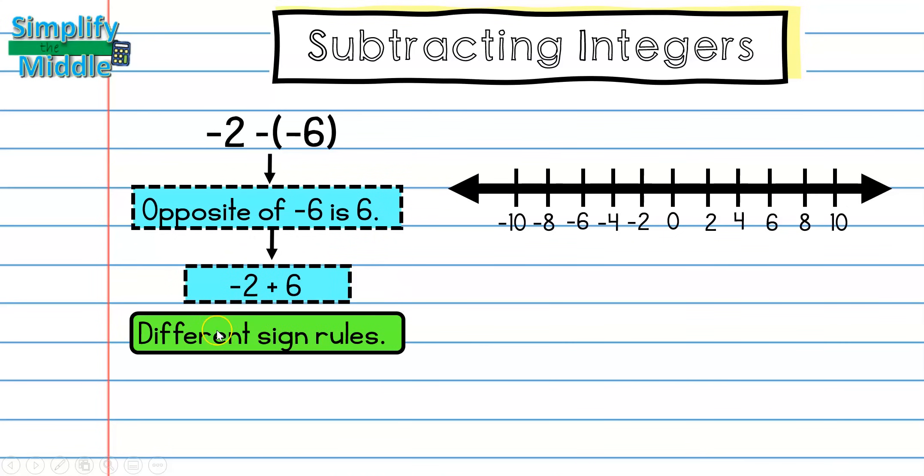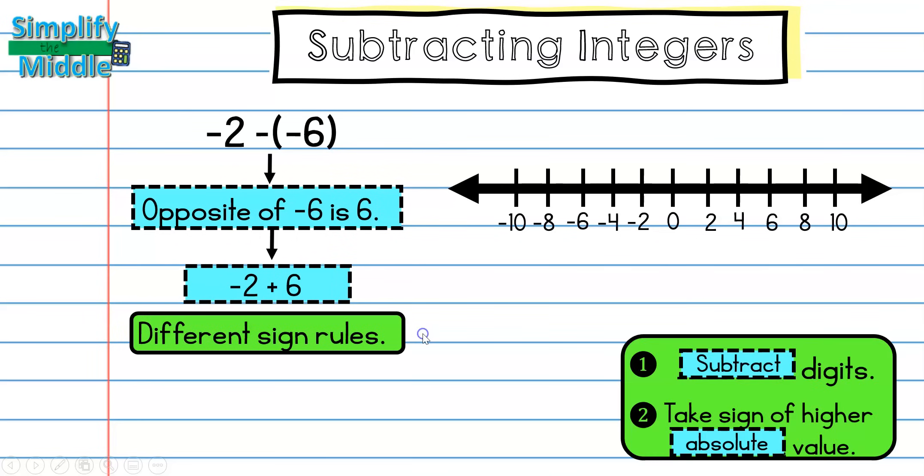These are different signs, so we're going to follow the different sign rules, which tell us to first subtract the digits. And I can rewrite that in any order I want, so 6 minus 2 is 4.